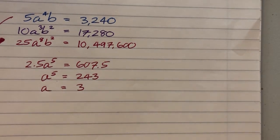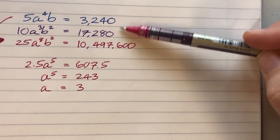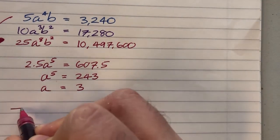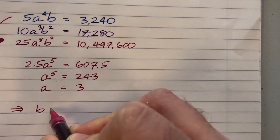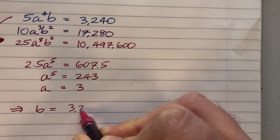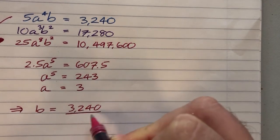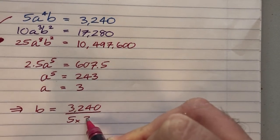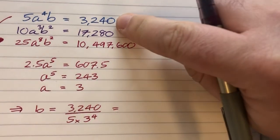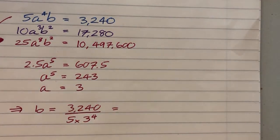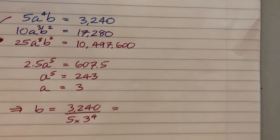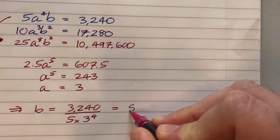And now that I've got the value of a, I plug it back into one of these two to find the value of b. So this implies that b is 3,240 divided by 5 times 3 to the 4. So let's use the top one here. So 3,240 divided by 5 times 81 gives me that b is the number 8.